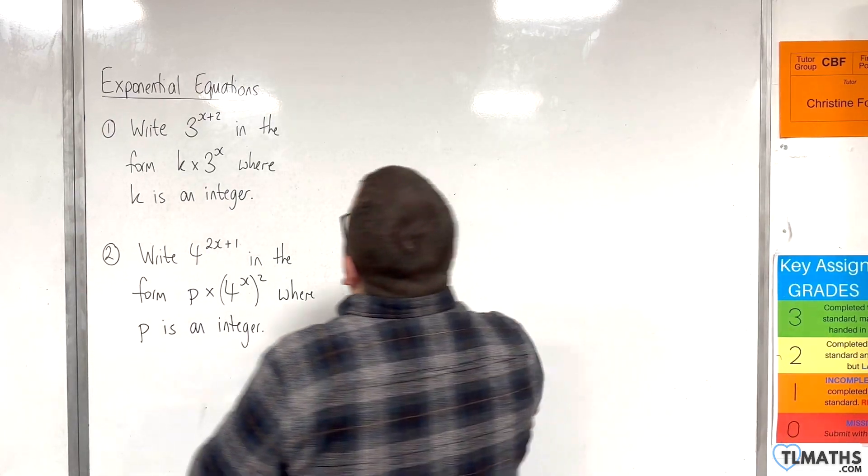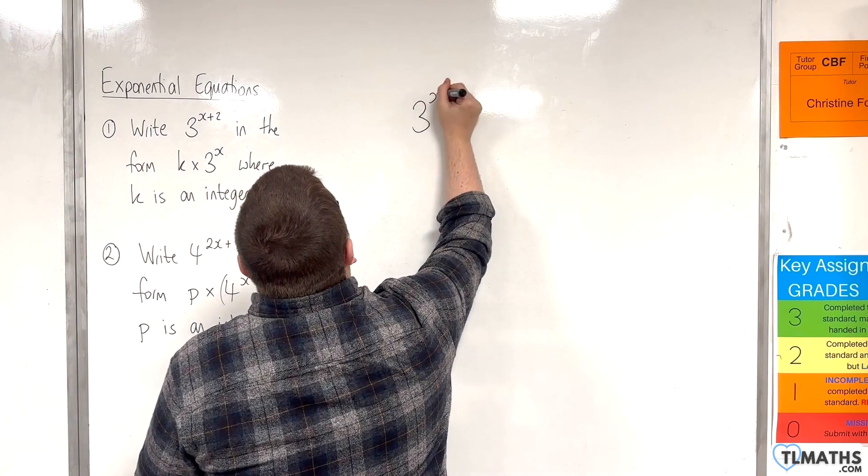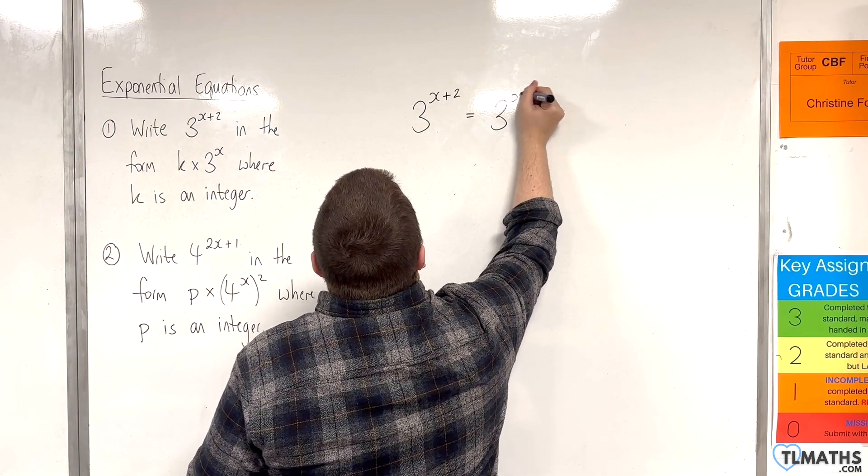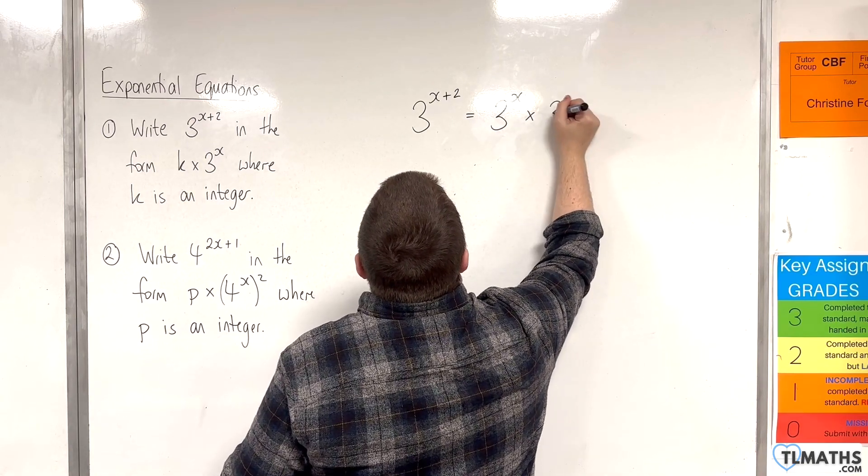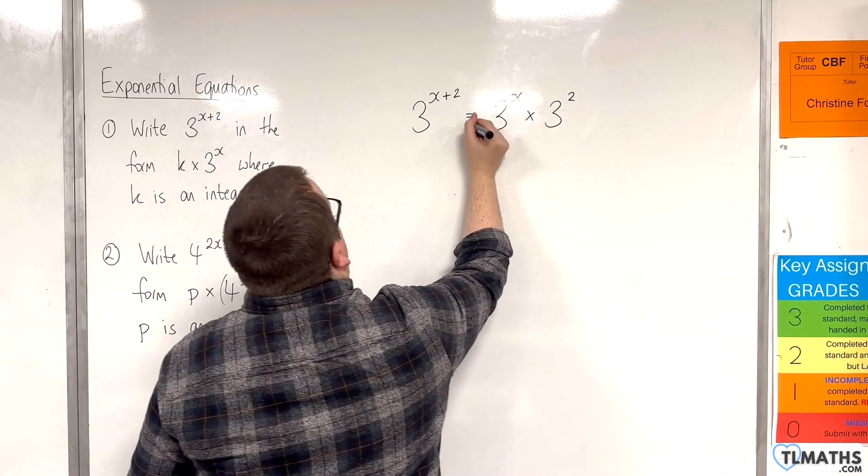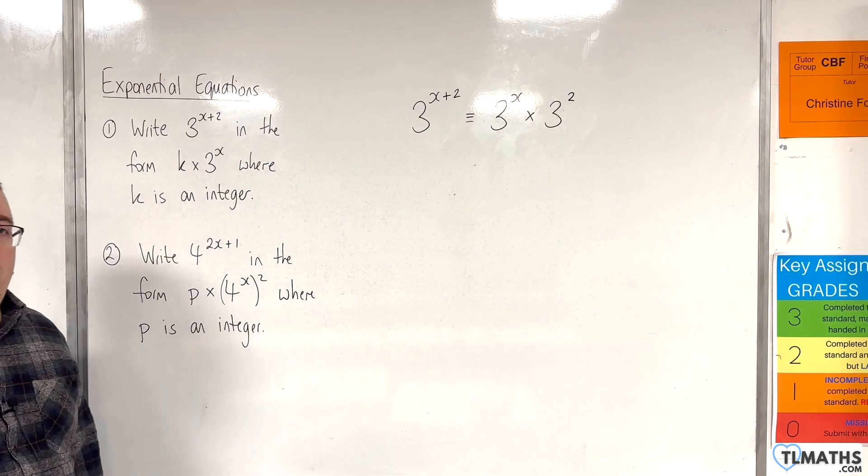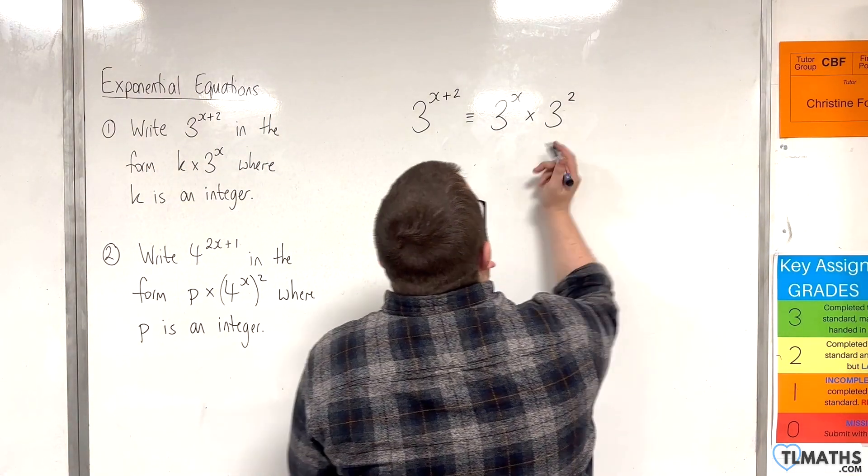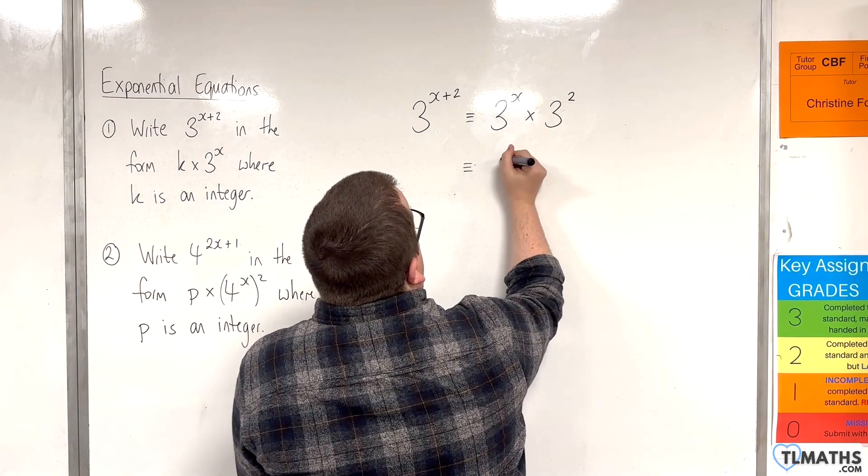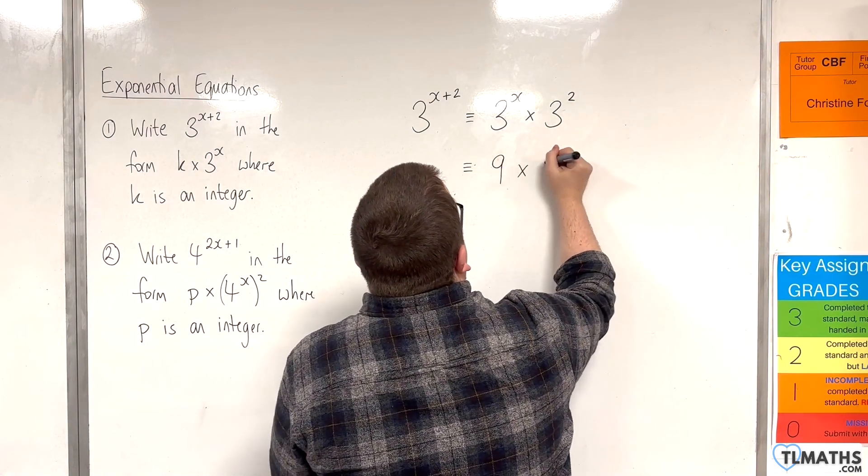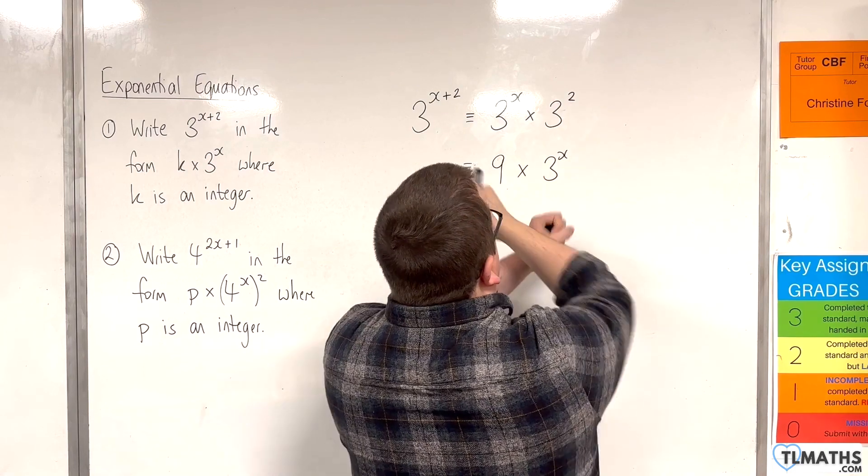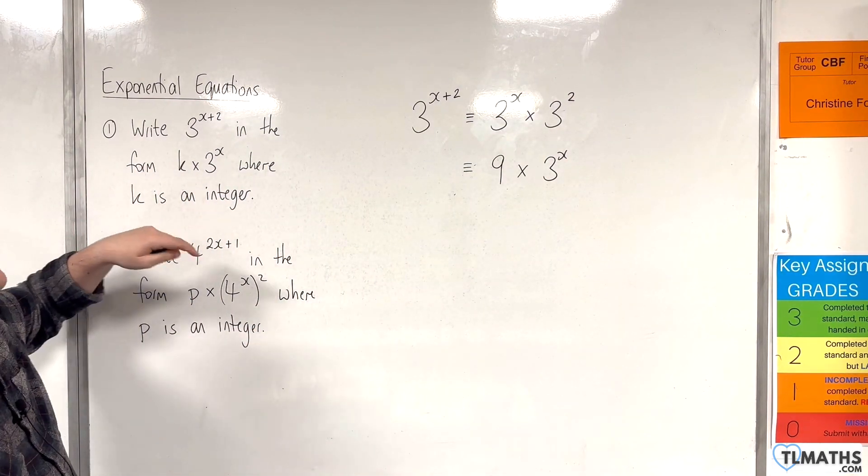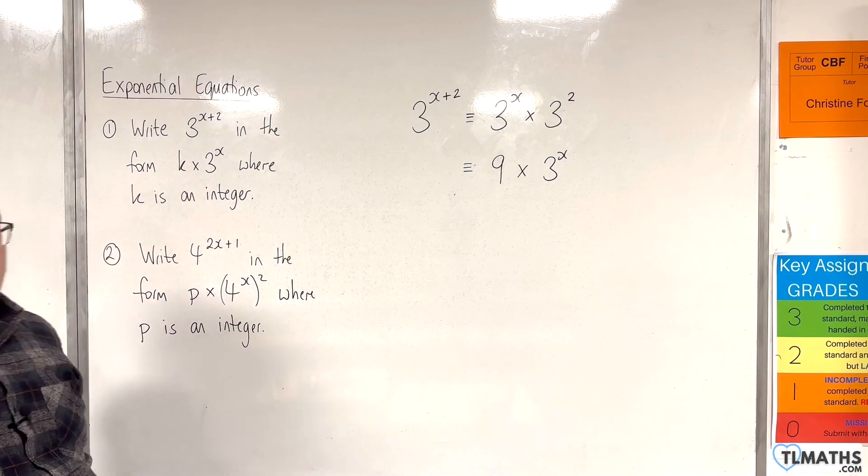Okay, so 3 to the x plus 2, that's the same as 3 to the x times by 3 squared. Okay, so they are equivalent using our laws of indices. Now the 3 squared is just 9, so this is the same as 9 times 3 to the x, just reversing the order there. And so I've now written it in the correct form where k is equal to 9.